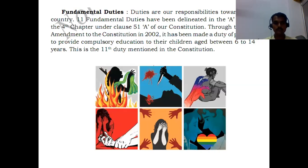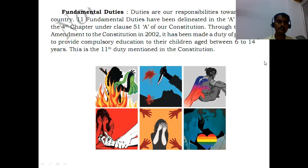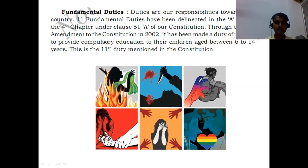Another salient feature is fundamental duties. These are the responsibilities of every citizen which we need to fulfill towards our country. There are 11 fundamental duties delineated in the fourth chapter under clause 51A of our constitution. Through the 86th amendment to the constitution in 2002, it was made a duty of parents to provide compulsory education to their children between ages 6 to 14 years. This is the 11th duty mentioned in the constitution.